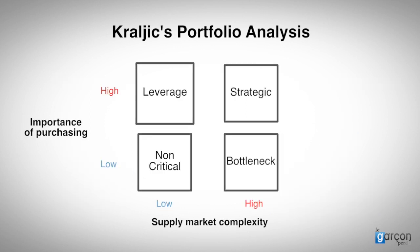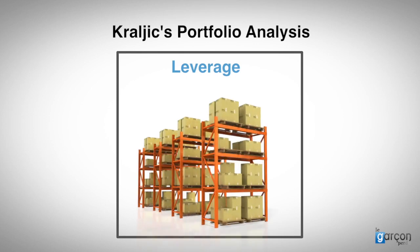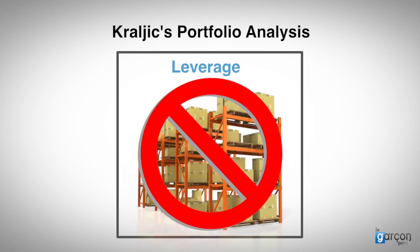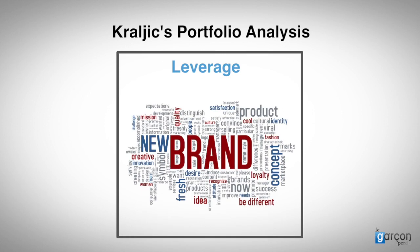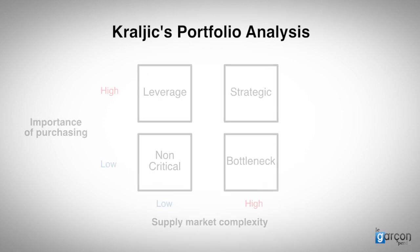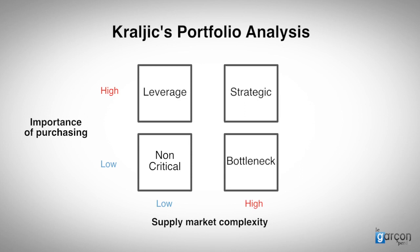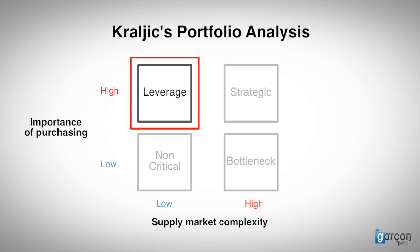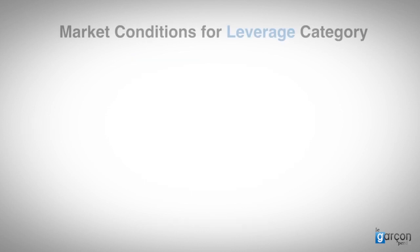Now let's look at the leverage quadrant. The truth is that most suppliers do not want to be commoditized, and consequently, suppliers develop strategies to avoid being in this quadrant. The result is that there are fewer categories in this quadrant than you might expect. But conversely, many procurement strategies seem to treat all categories as if they were leverage. So let's look at the market conditions for a category to be classified as leverage.